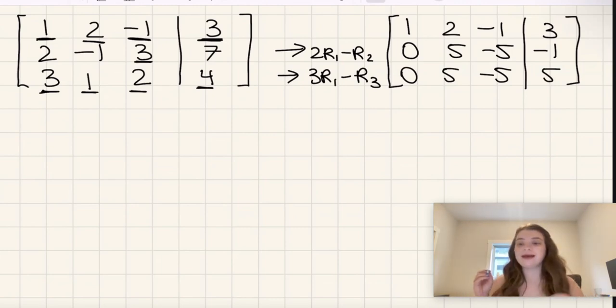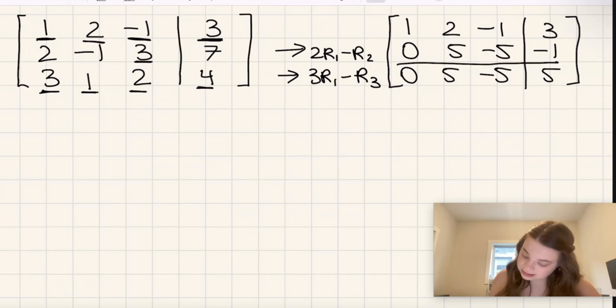Okay. So now we have a bit of a problem here. Well, it's not really a problem exactly, but there's something I noticed. I noticed that this equation here, this second equation here, essentially is saying that 5y minus 5z is equal to negative 1.